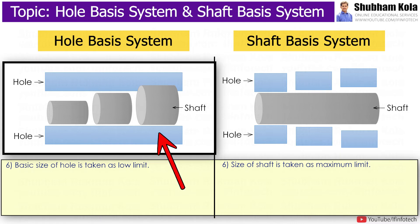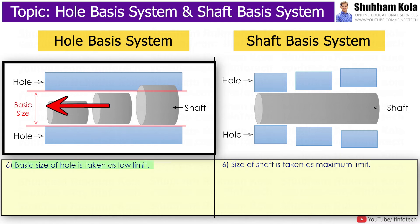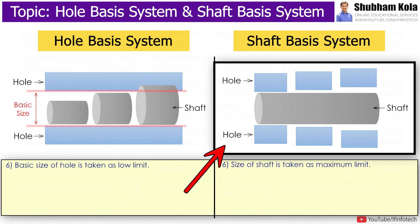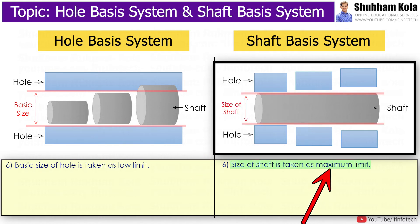In hole basic system, the basic size of hole is taken as the lower limit, whereas in shaft basic system, the size of shaft is taken as the maximum limit.